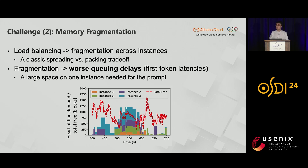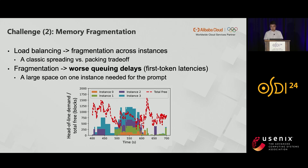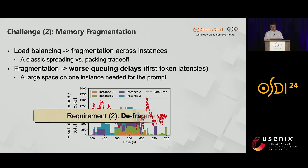To visualize this, we did an experiment with four instances using a spreading policy for request dispatching. We plot the memory demand of the head-of-line queuing request on each instance against the total free memory space in the cluster. For most of the time span, the total memory space can satisfy the queuing request on at least three instances, but they're still queuing because the free space is fragmented. This shows that beyond load balancing, we also need the ability of defragmentation.